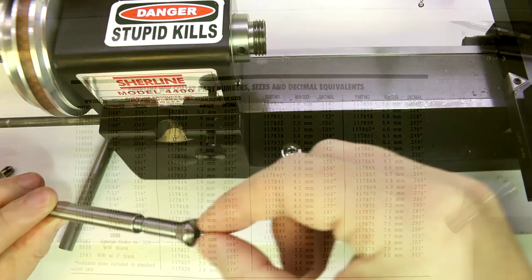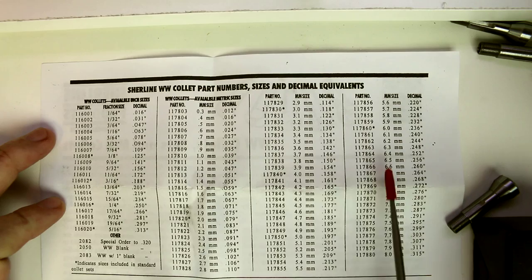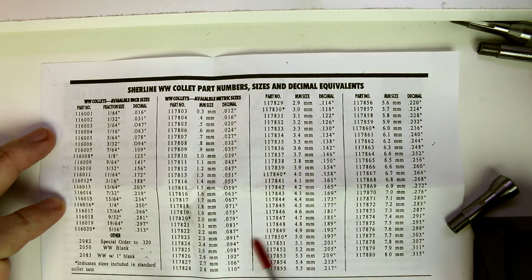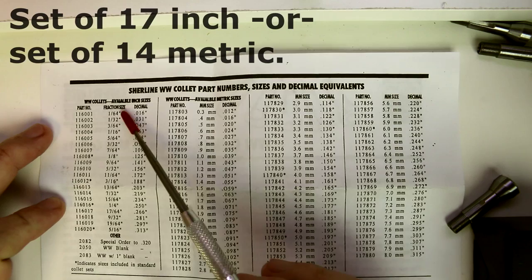Okay, quickly wanted to go over the size range of the WW collets that Shearline offers. Included in any of the packages or you can download this sheet from their website will be all their part numbers and sizes. I believe the total number of metric collets is 78. Don't quote me on that though. I will check when I publish the video and give you the right number if I'm wrong there.